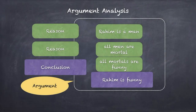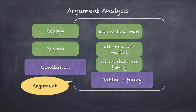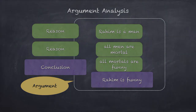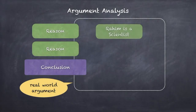It could also be a reason leading to a conclusion, and that conclusion then becomes another reason for a further conclusion. For example: Rahim is a man, all men are mortal — therefore Rahim is mortal. Then if all mortals are funny, we know Rahim is mortal, and therefore Rahim will become funny. This is again a very academic argument — no ambiguity, all reasons provided, and the flow is quite clear.